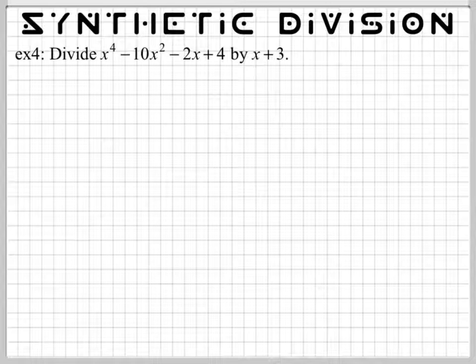The only stipulation is you can only do synthetic division when it says x plus a number as your binomial. And so this is how you set it up. Put a little box right here, and then we're going to have a line right here and a dotted line right here.